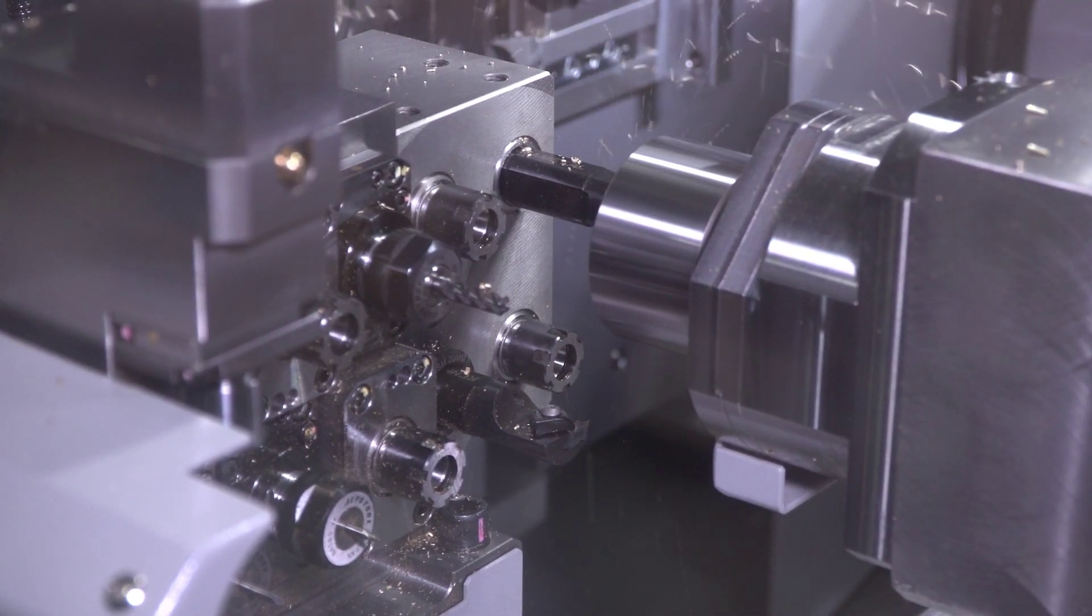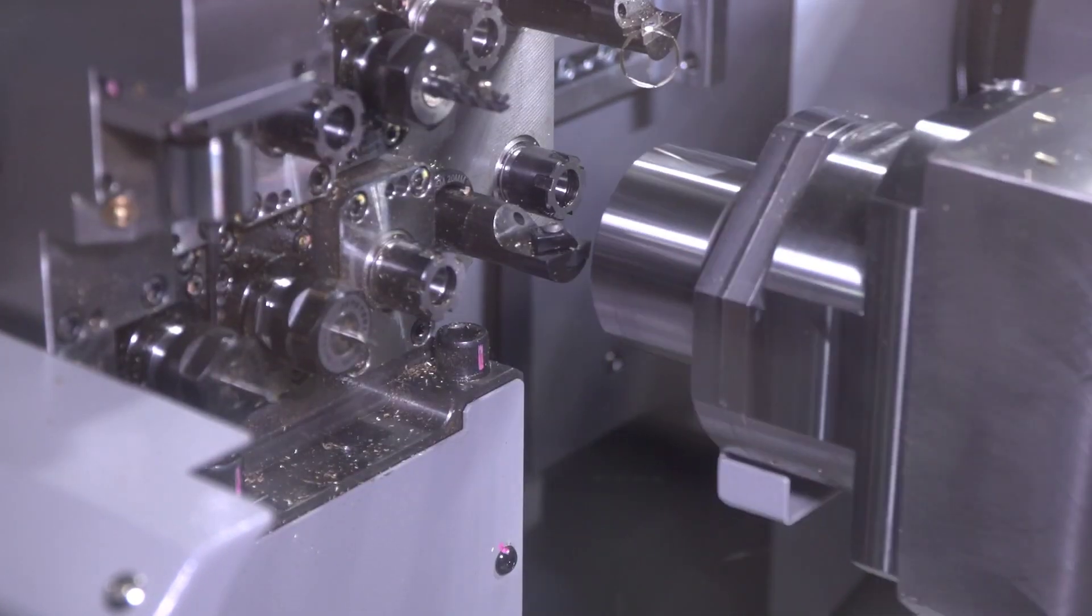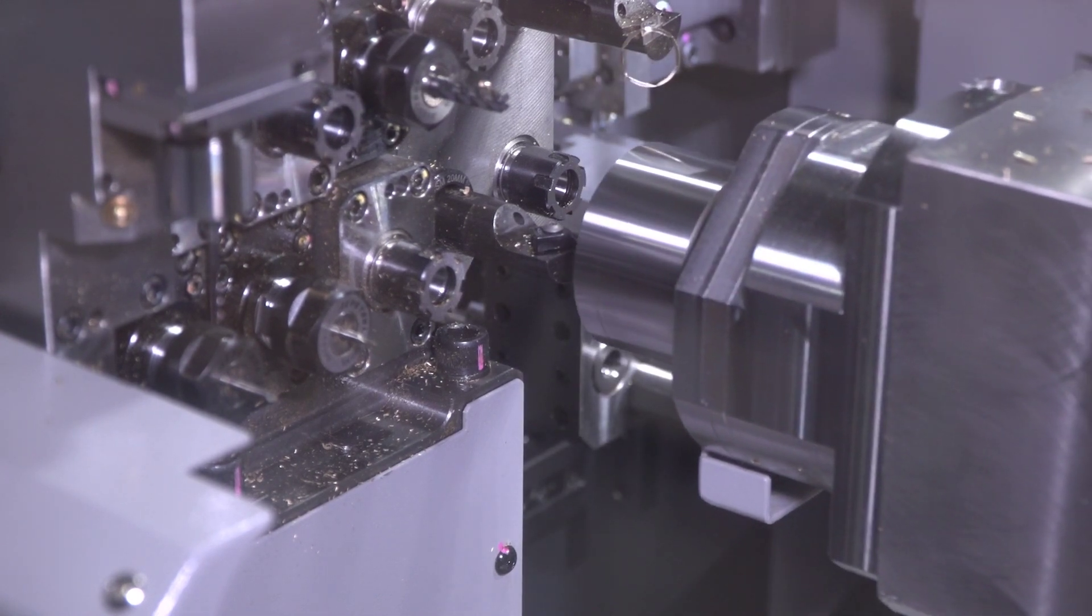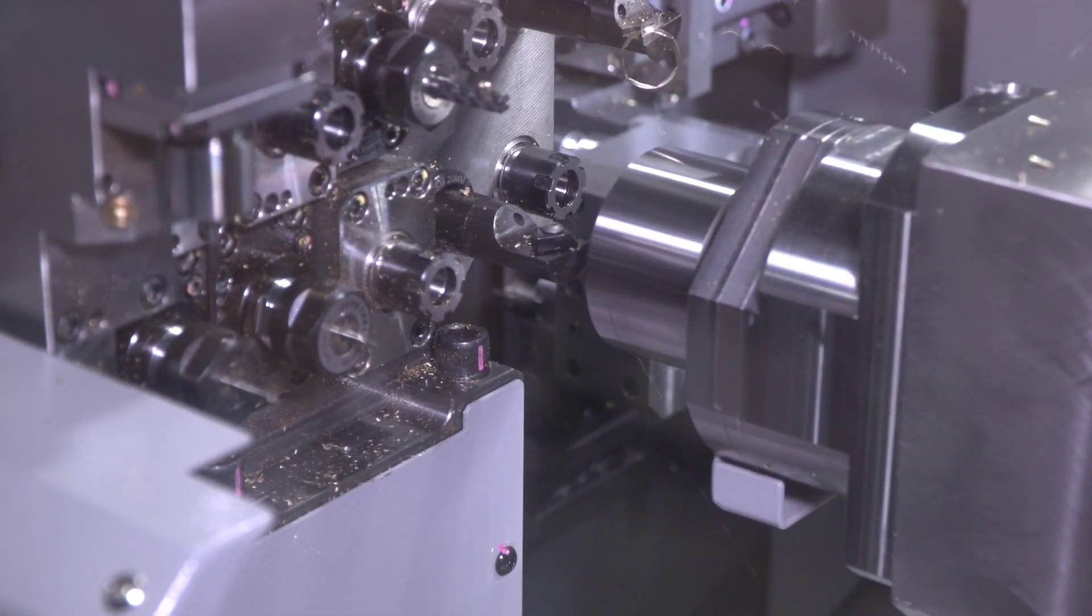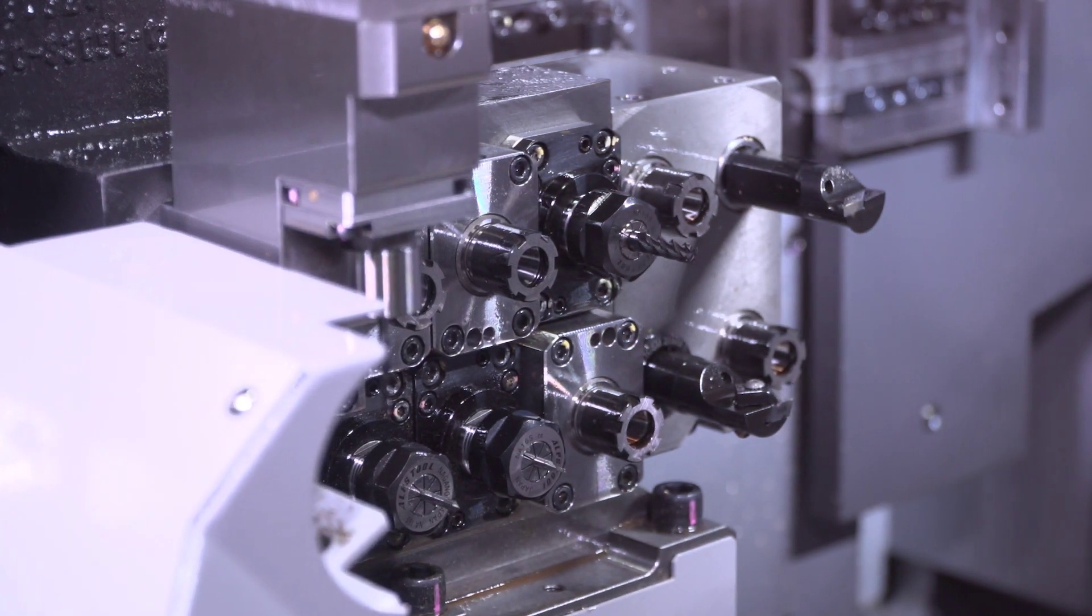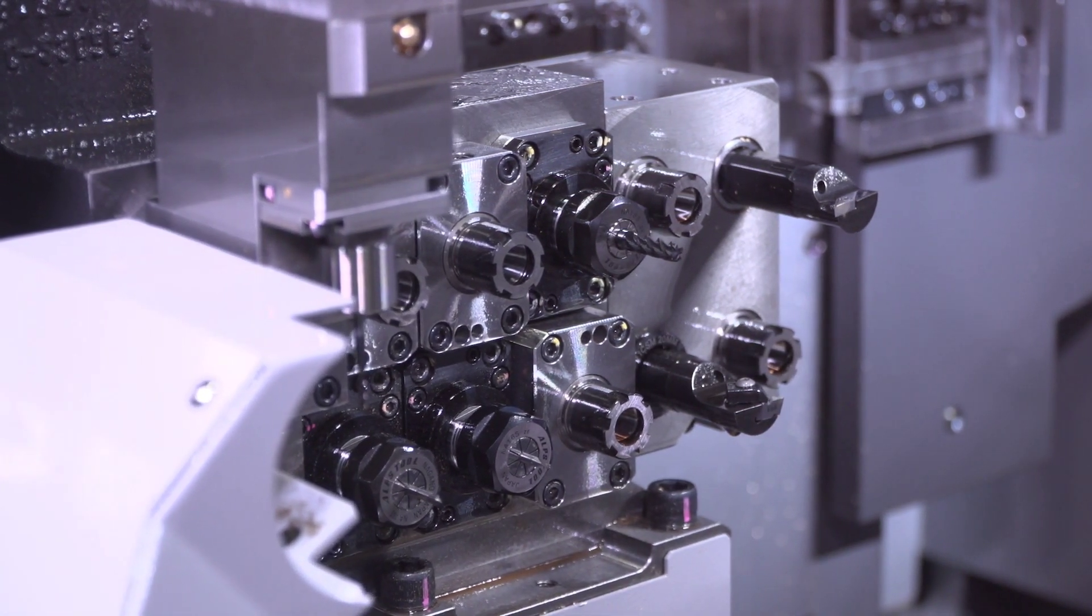Another key feature of the Tsugami S206 Mark II is the rear working block. Now you can have 12 tools that address the sub spindle. Eight of them can be live or you can have all of them static.